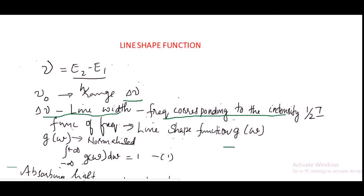Atoms can interact with the radiation over a range of frequencies, and this function is known as the line shape function. The line shape function is represented using g(ω) and it is normalized. The normalization condition is: the integral from minus infinity to plus infinity of g(ω) dω equals 1.